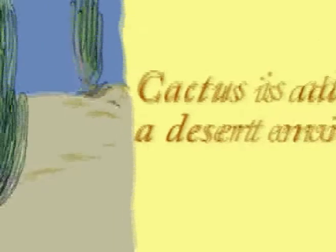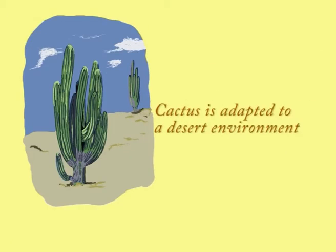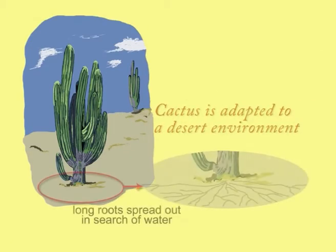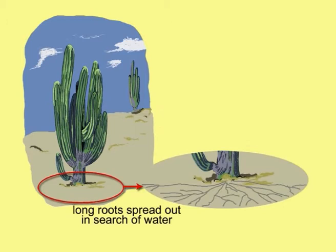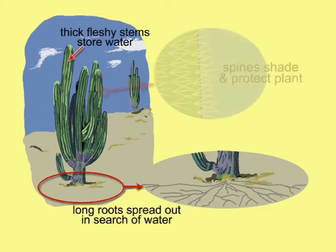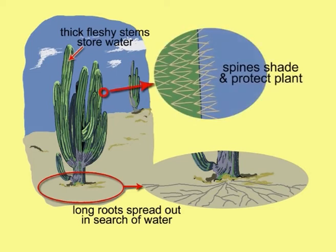For example, cactus grows well in the desert. It has long roots that spread out in search of water, thick fleshy stems to store it, and spines that shade the plant and protect it from browsing animals.